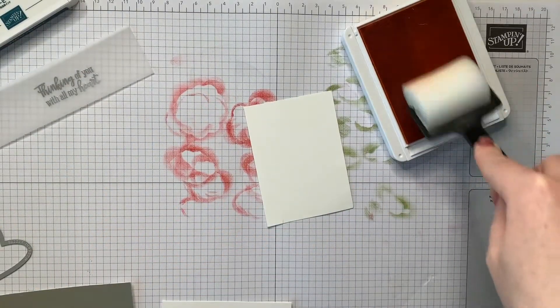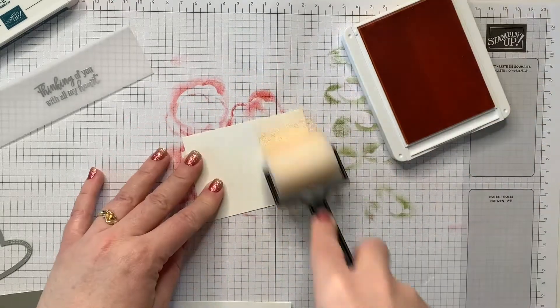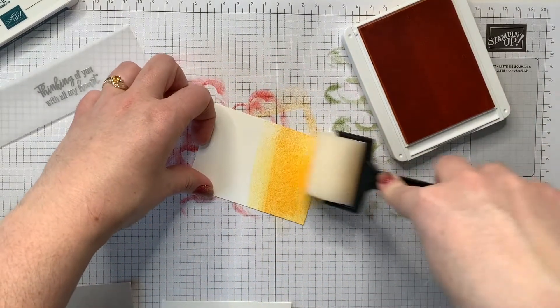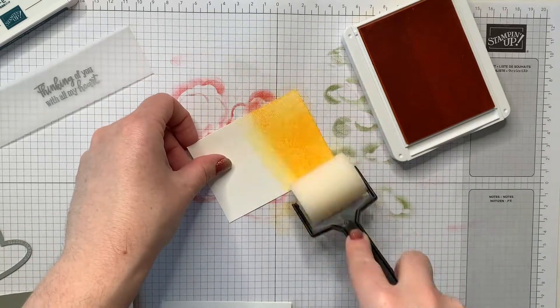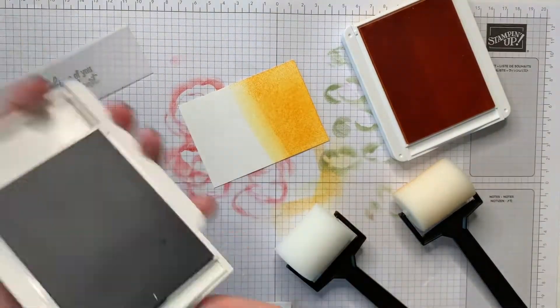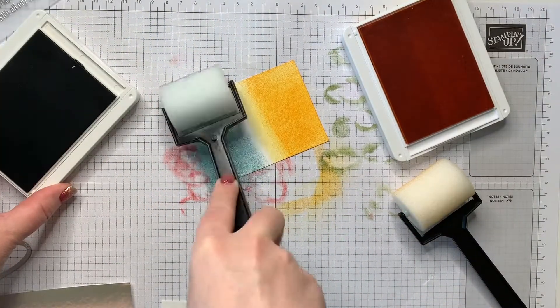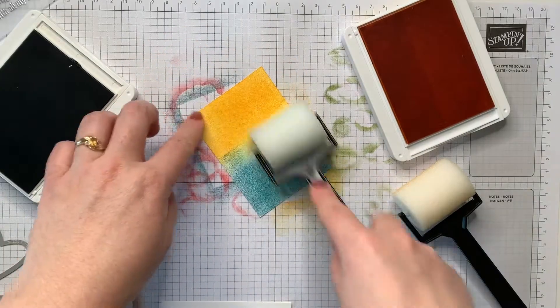I am taking one of our sponge brayers with mango melody ink and a scrap piece of whisper white cardstock and I'm just going to play around and get the ink down on the paper. This is my first time playing with those sponge brayers and I had a really good time. I don't know what took me so long to play around with these.